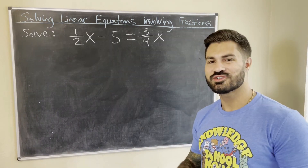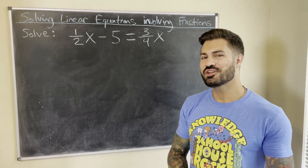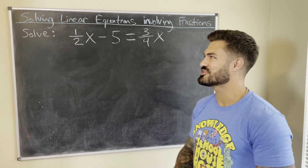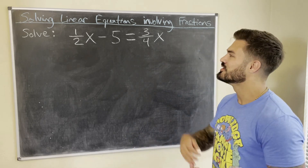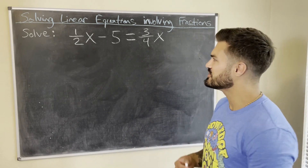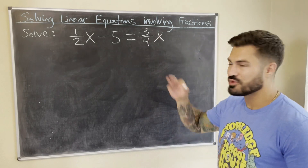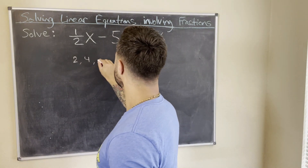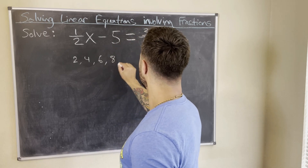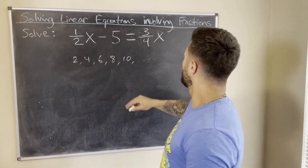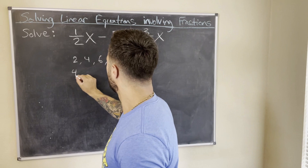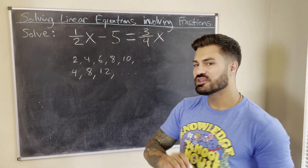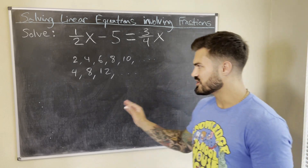So here's our next example. I encourage you to pause the video, pull out a scratch piece of paper and pencil, and try this on your own for practice, then press play to check your answer. Again, looking at the fractions involved, we have one-half and three-fourths. Let's list out the multiples: these are the multiples of 2, and the multiples of 4. We actually already notice we have our least common multiple right away.